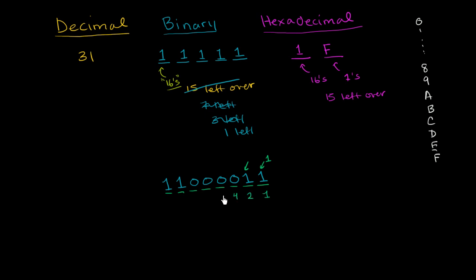So you have 1, 1, which is just 1. You have 1, 2, which if we wanted to represent it in base 10, you would call that 2. Then you have 0, 4's, 0, 8's, 0, 16's, 0, 32's. You do have 1, 64, and you do have 1, 128.